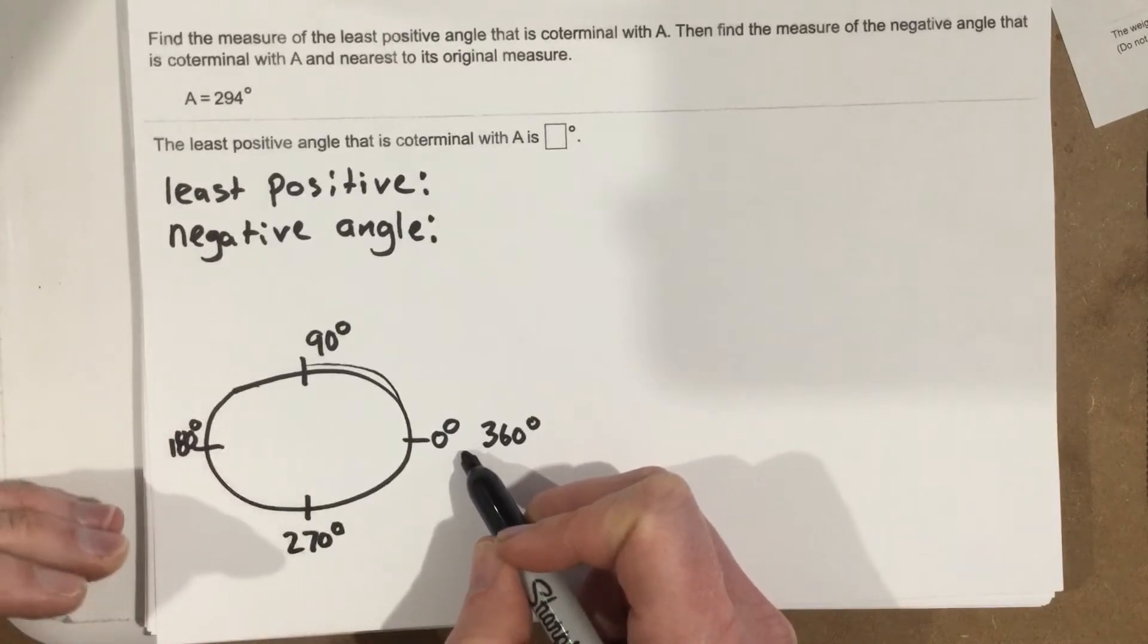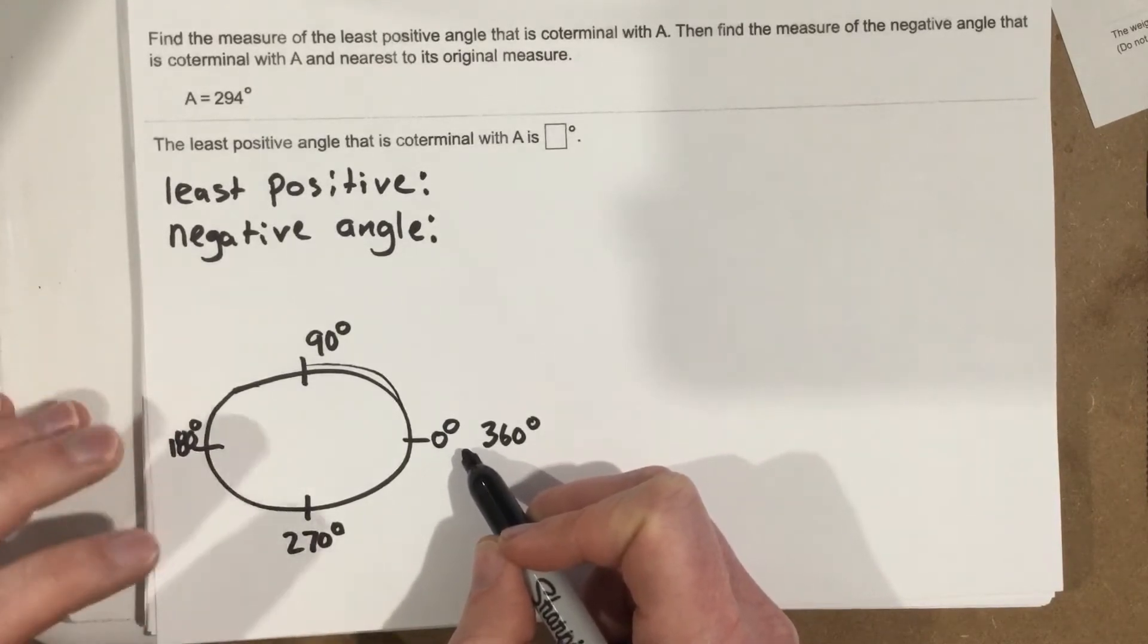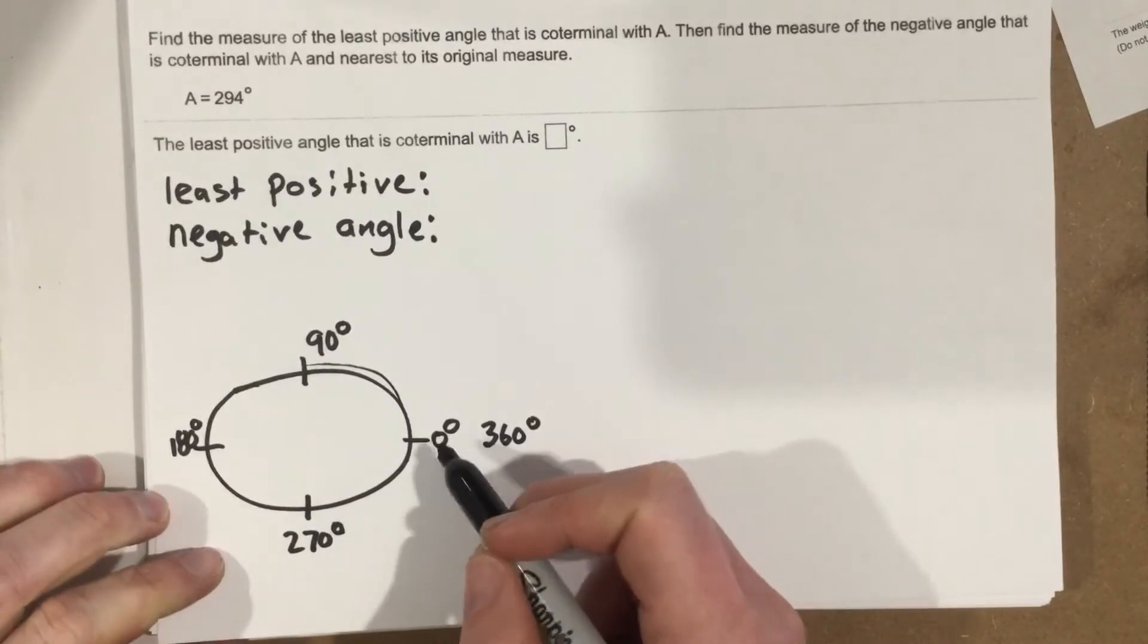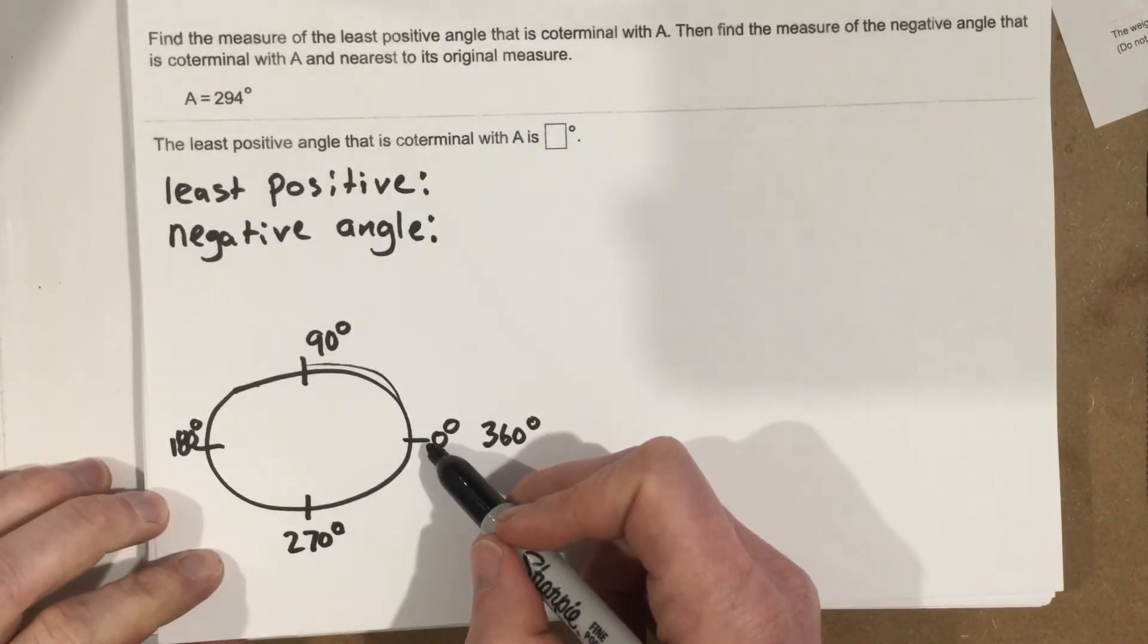Because you're facing the same way, the angles are technically the same. Although you did a spin, nobody would be able to know that you actually spun because you're facing the same direction unless they saw you spin. So coterminal angles just mean you're in the same exact spot on the circle.